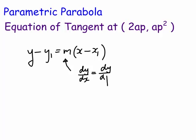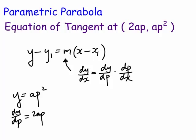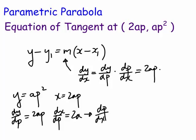Using the chain rule: dy/dx = (dy/dp) × (dp/dx). Now y = ap², so dy/dp = 2ap. And x = 2ap, so dx/dp = 2a. Therefore dp/dx is just the reciprocal, which is 1/(2a). Multiplying: dy/dx = 2ap × (1/2a), and the 2a's cancel, giving us p. So the gradient of the curve at the parametric point is p.